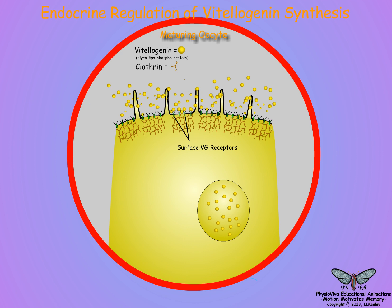The vitalogenin-bound receptors sink into the oocyte surface to form a pit, which is then coated with clathrin. Clathrin is a fibrous protein that forms a cage-like coating on cell surface receptors and vesicles to stimulate endocytotic events that transfer extracellular chemicals into cells.